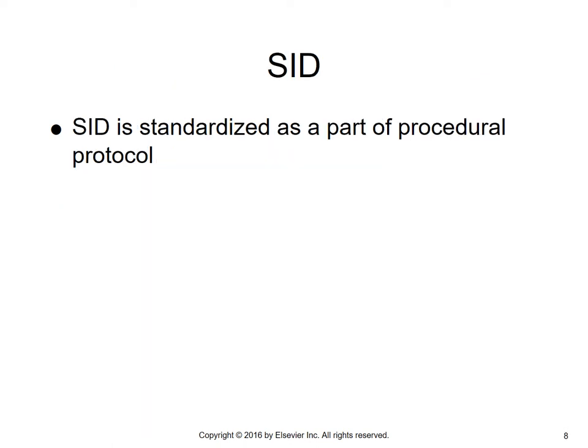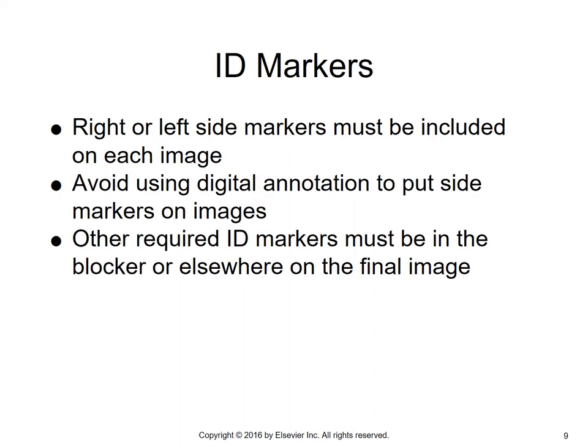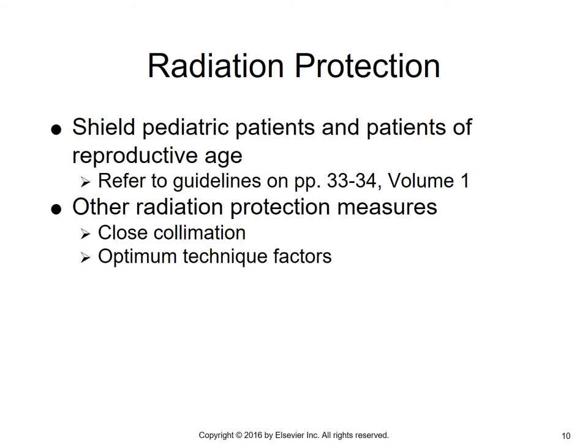SID will be standardized as part of the procedural protocol — generally 40-inch SID. For ID markers, right or left side markers must be included on each image. Avoid using digital annotation; use lead markers instead. Other required ID markers must be in the blocker or elsewhere on the final image. For radiation protection, shield pediatric patients and patients of reproductive age. Use close collimation and optimum technique factors.